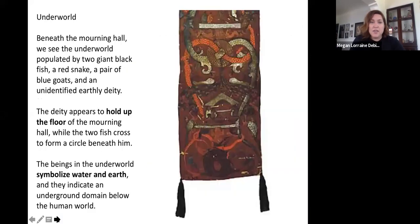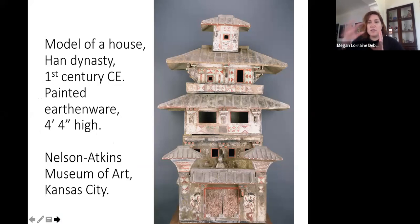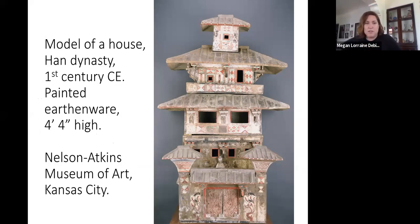Another thing often found in Han dynasty tombs are these models of houses, which tells us a lot about what a house would have looked like at the time. This one is about four feet high, and you can see that the homes are very vertical.